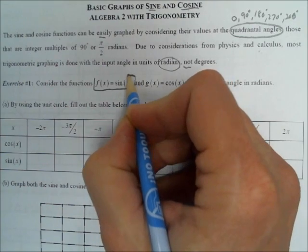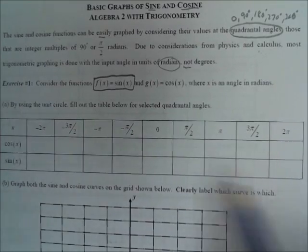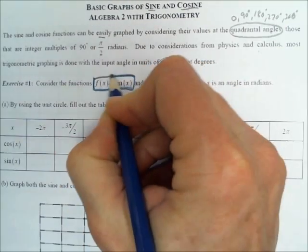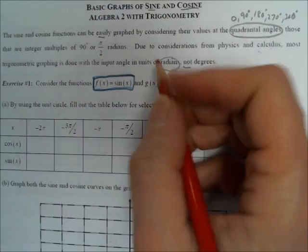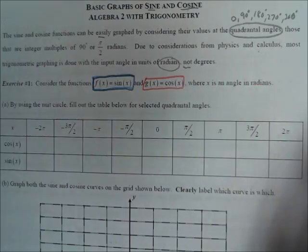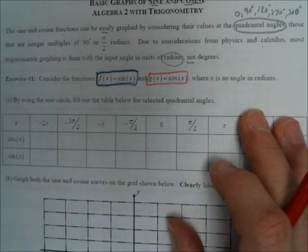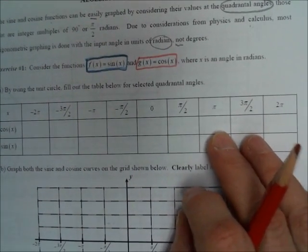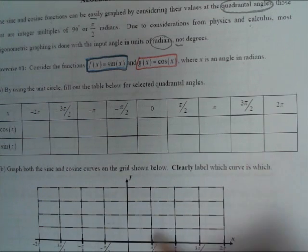We're going to look at two functions. The first is f of x equals sine of x — that will be a blue graph. The second is g of x equals cosine of x. To graph functions we fill out a table of x and y values so we can plot them as x, y points.